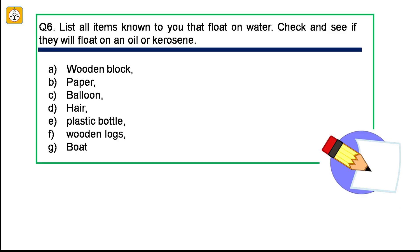Question number 6: List all items known to you that float on water. Check and see if they will float on an oil or kerosene. Wooden block, paper, balloon, hair, plastic bottle, wooden logs, boat, etc. will float on water. A few of this like hair, balloon, can float on kerosene oil.